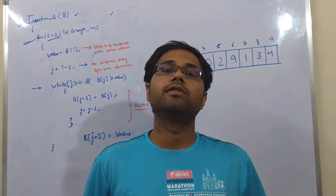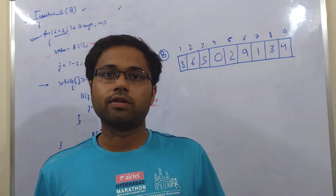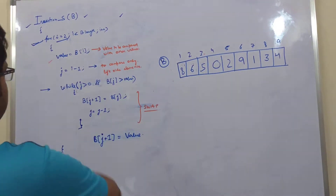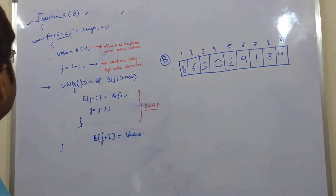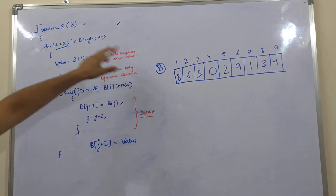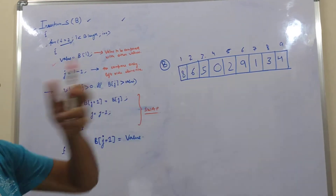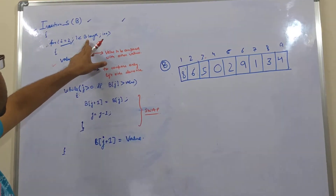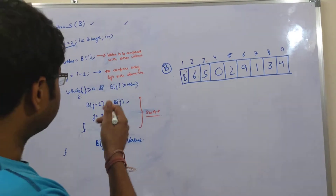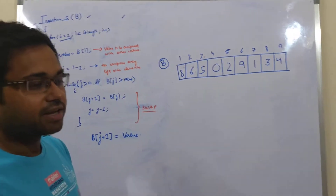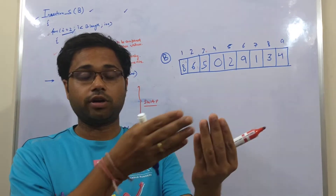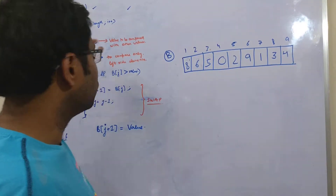This is the continuation of the first lecture. In the previous lecture we saw how insertion sort works, but we have not seen the pseudo code. In this lecture I will explain how the pseudo code works according to our example. The for loop starts from i equals 2 to b.length. B is our array. We start from i equals 2 because the first card in our left hand does not need any comparison or sorting.